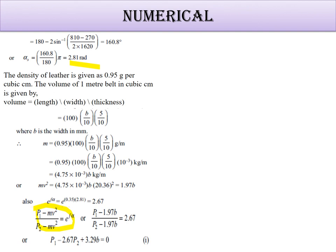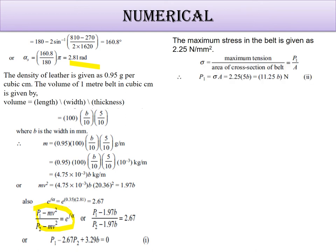The maximum stress in the belt should not exceed 2.25 Newton per mm square. Stress equals maximum tension over area of cross-section of belt. So P1 equals sigma times A, which gives us 11.25 b N.